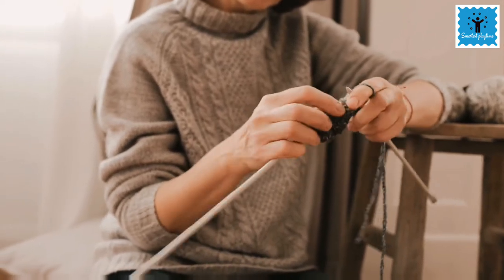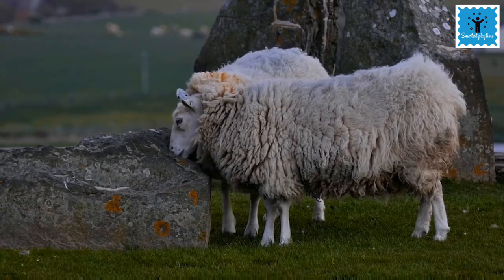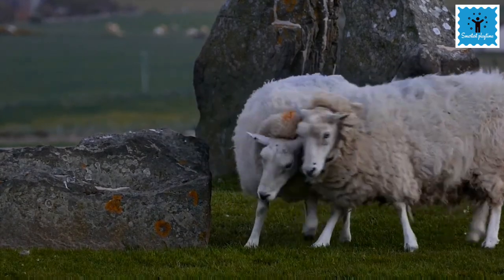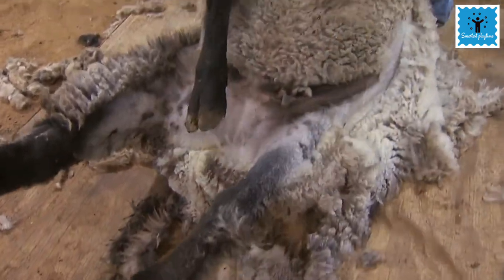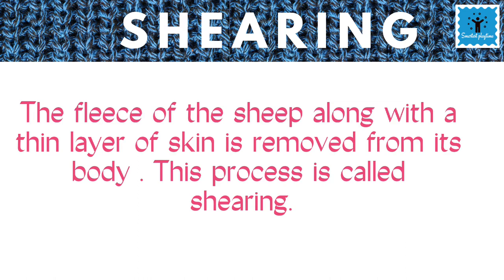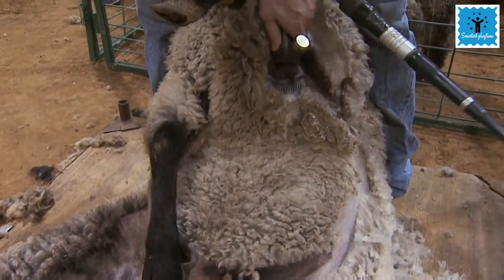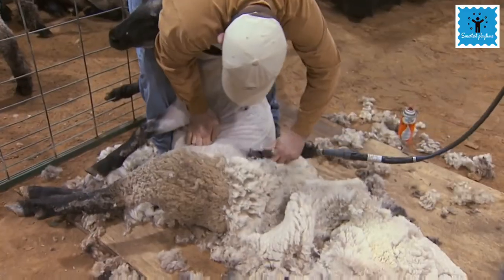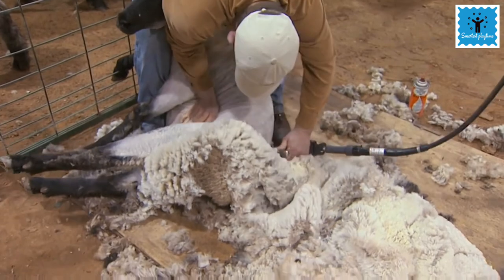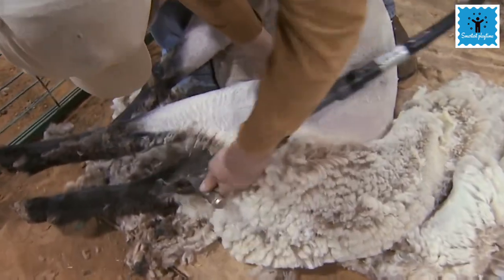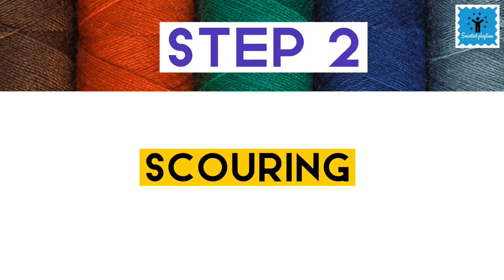Making wool from sheep hair involves many steps. The first step is called shearing. When sheep develop a thick growth of hair, the fleece along with a thin layer of skin is removed from the body using a shaving machine. Shearing doesn't hurt the sheep because the uppermost layer of the skin is dead. Shearing is done in the hot summer weather so that sheep can survive without their protective coat, and their hair grows again before the onset of cold weather.